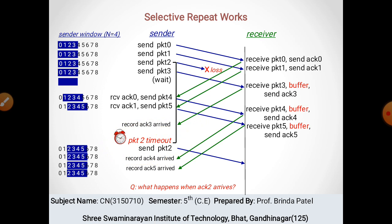Packet 2 का timeout होने पर sender packet 2 को फिर से send करेगा। उस समय receiver के पास packets 4 और 5 already receive हो चुके होंगे। Time record होगा और finally packet 2 send होगा।